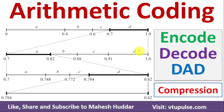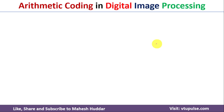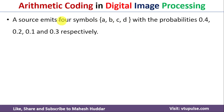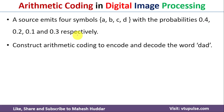Welcome back. In this video I will discuss how to encode and decode the word DAD using arithmetic coding. The problem definition is: a source emits four symbols A, B, C, D with the probabilities 0.4, 0.2, 0.1 and 0.3 respectively. We need to construct arithmetic coding to decode and encode the word DAD.